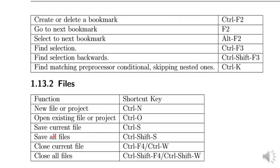This part covers shortcuts generally used with files. To open a new file or project, simply press Ctrl+N. You can save the current file with Ctrl+S. You can save all files — let's say you have a lot of files open, your header files, your source files — you can save all at once by pressing Ctrl+Shift+S. You can close all files by pressing Ctrl+Shift+F4 or Ctrl+Shift+W.